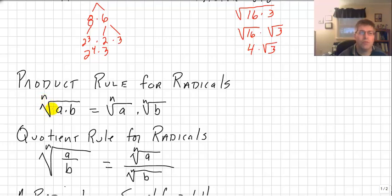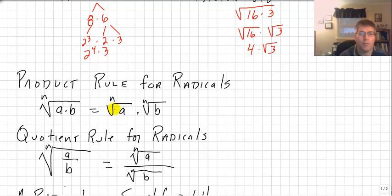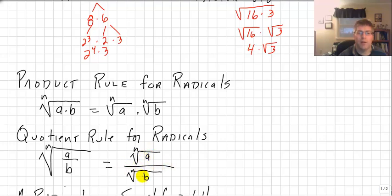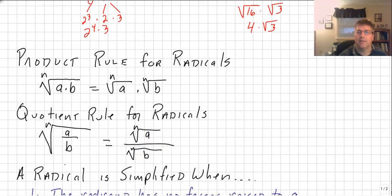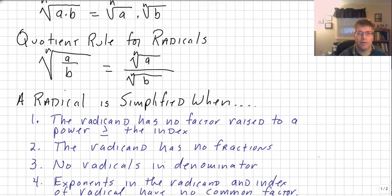The product rule for radicals states: the nth root of a times b equals the nth root of a times the nth root of b. I was using square roots before, but this applies equally to cube roots, fifth roots, or any root. Similarly, the quotient rule for radicals — which we've been using since the beginning — states that the nth root of a over b equals the nth root of a divided by the nth root of b.